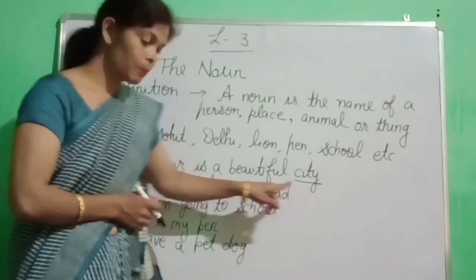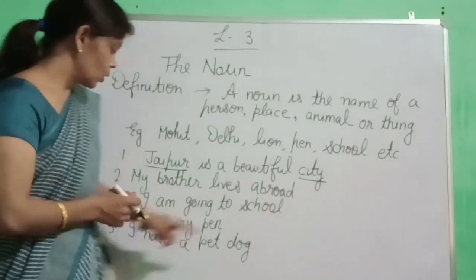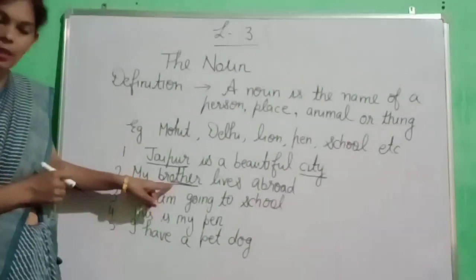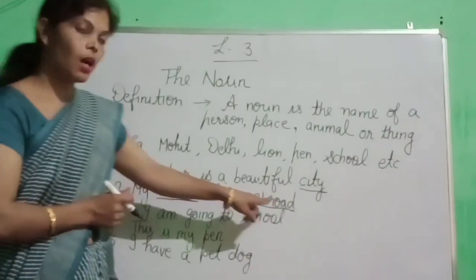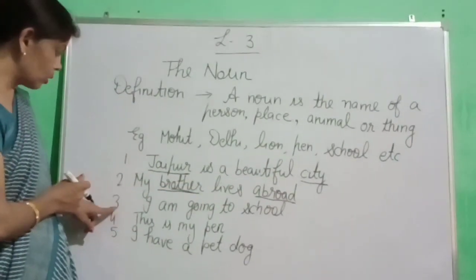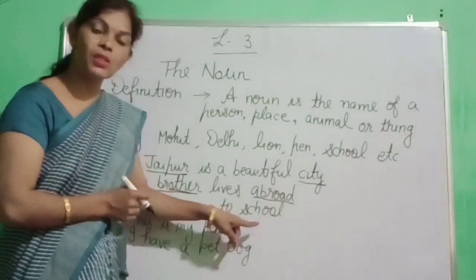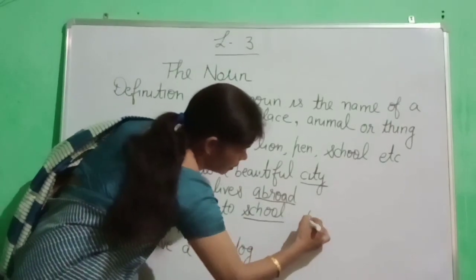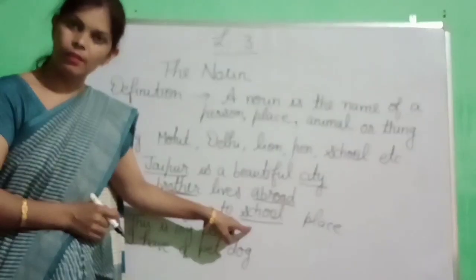In the second sentence, my brother lives abroad. So — brother. Brother is noun. Abroad — abroad kya hai? Place hai na? So brother and abroad are nouns. Third sentence: I am going to school. Main school ja raha hun. School kya hai? Place hai na? Place ka name hai, so it is a noun.